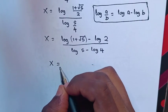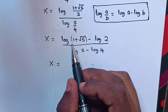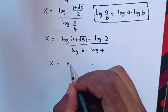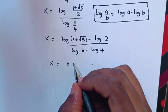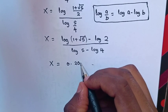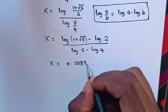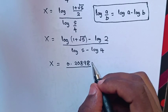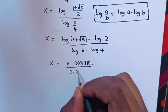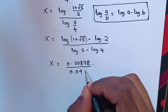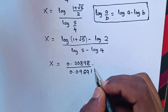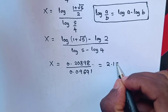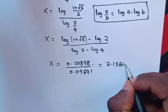Then x is equal to log of (1 plus square root of 5) minus log 2, which is 0.20898, over log 5 minus log 4, which is 0.09691. When we divide, x is equal to 2.15643.